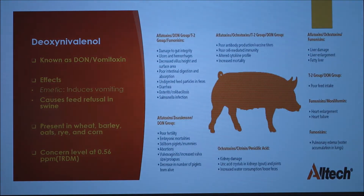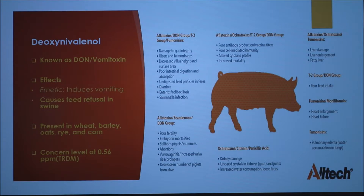Next we have deoxynivalenol. Deoxynivalenol is a mycotoxin that affects pigs mostly — they are most sensitive to it. It is an emetic, which induces vomiting, and it can cause feed refusal in most species, but most specifically swine. Deoxynivalenol is present in wheat, barley, oats, rye, and corn, and the concern level is 0.56 parts per million.